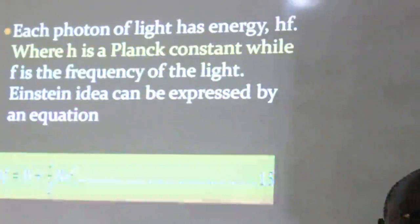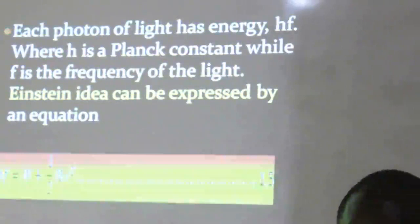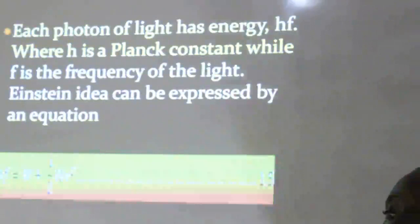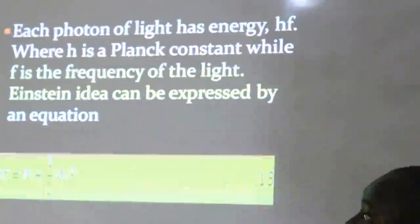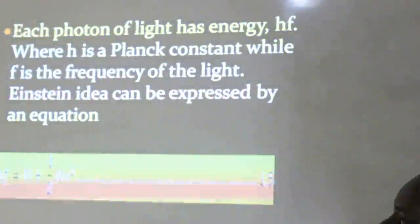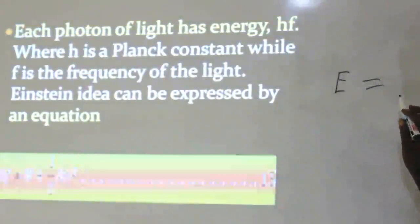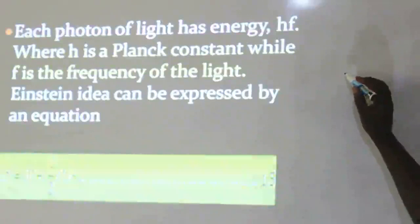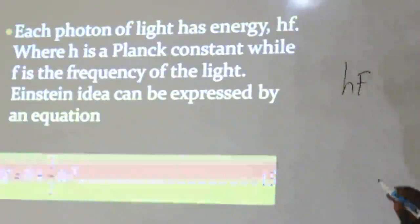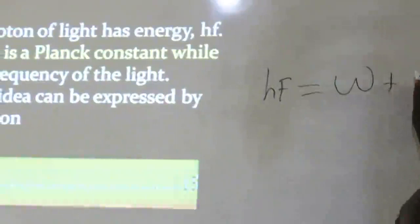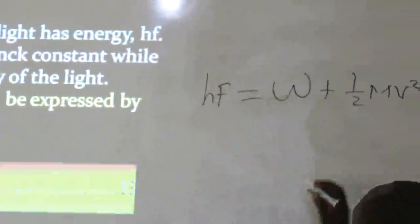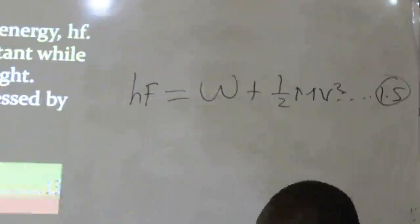Albert Einstein built his equations using the equations made by Max Planck. He said the total energy of the photon of light is the same as the Planck constant multiplied by frequency, which equals W plus one-half mv squared. This is our equation 1.5 on this topic.